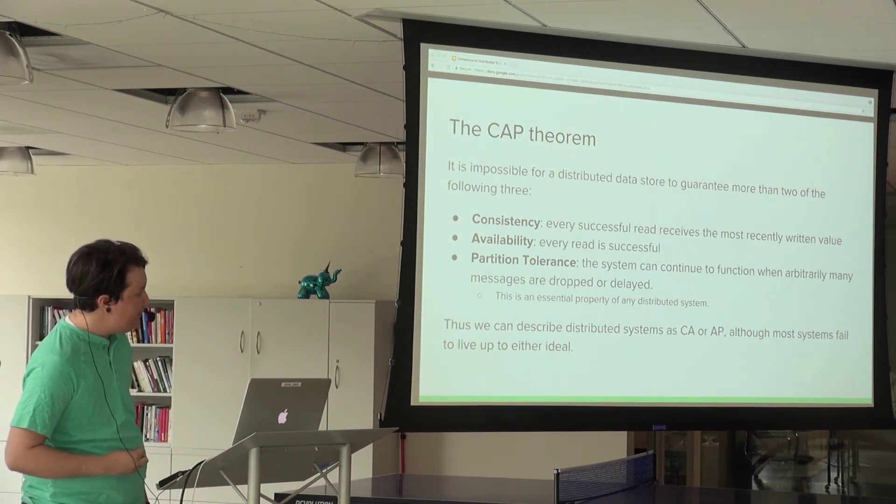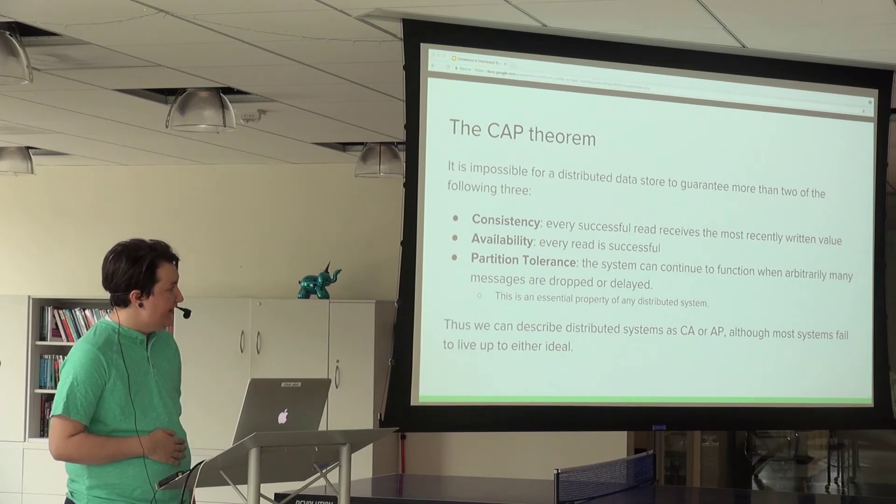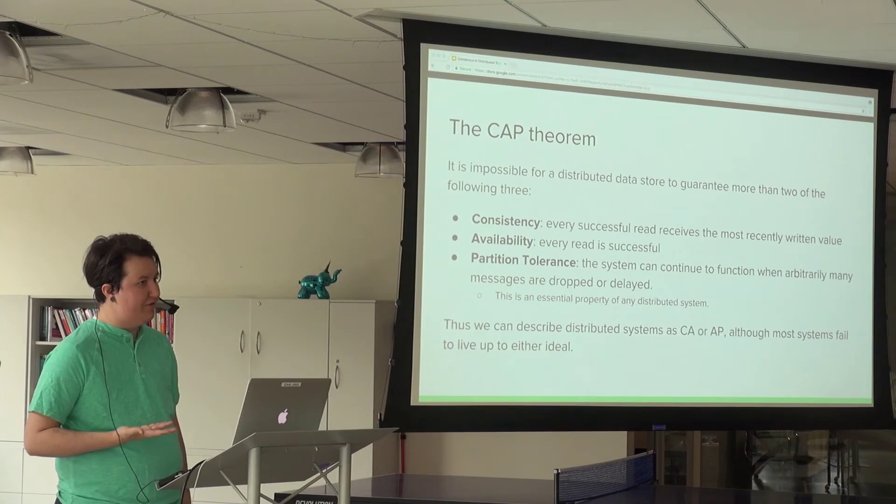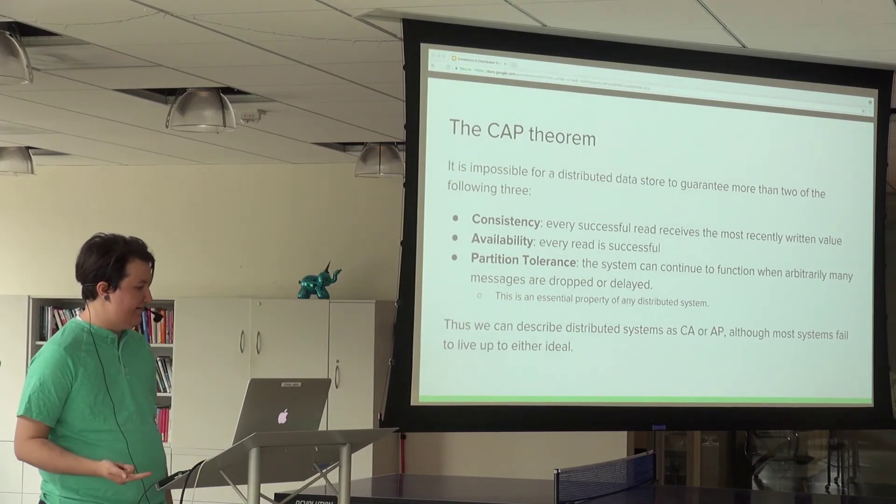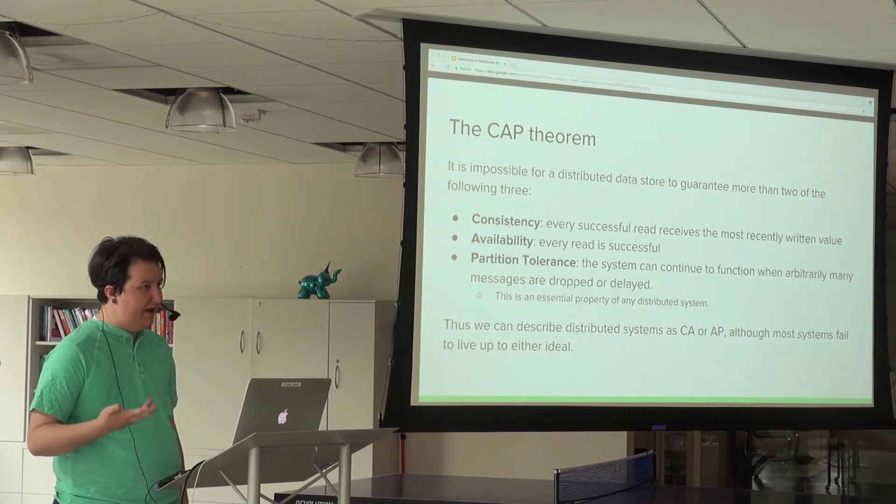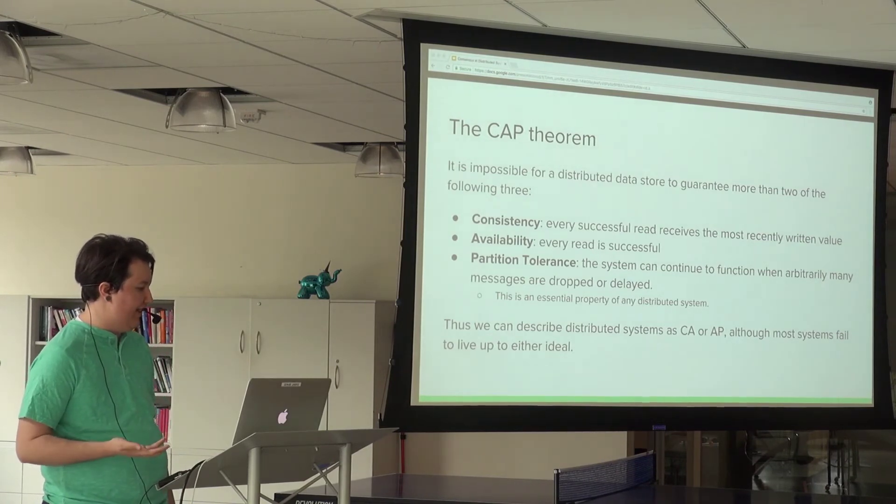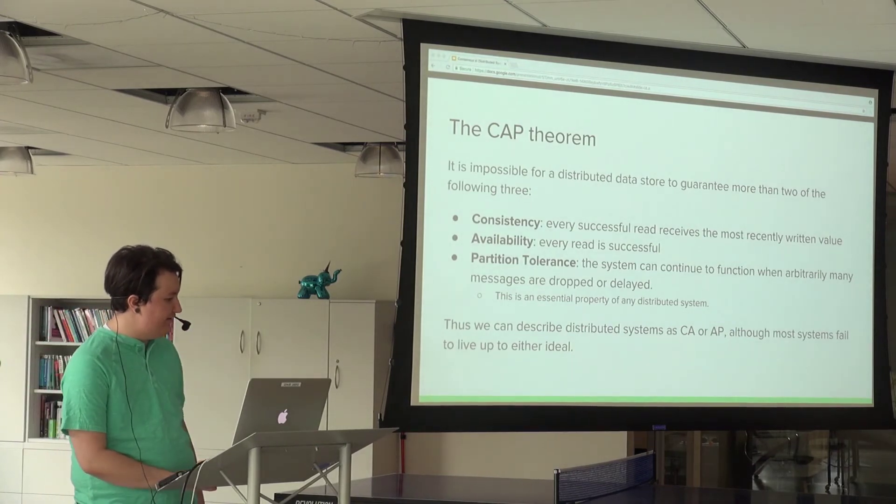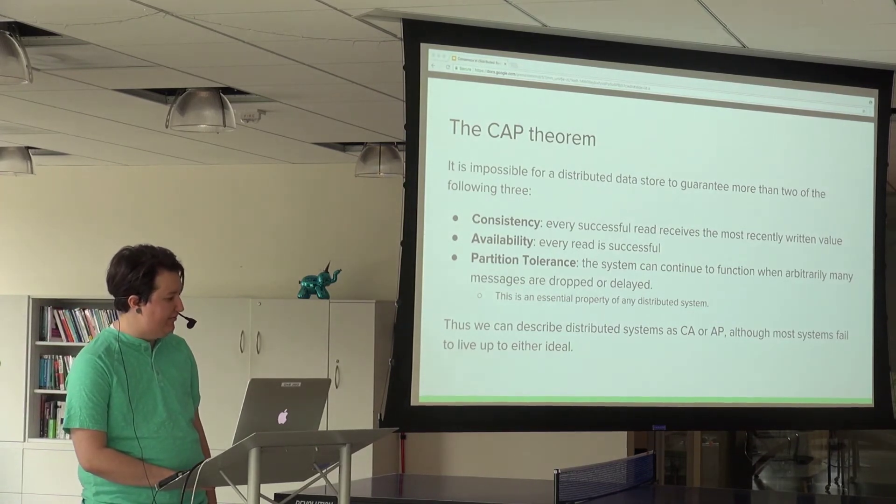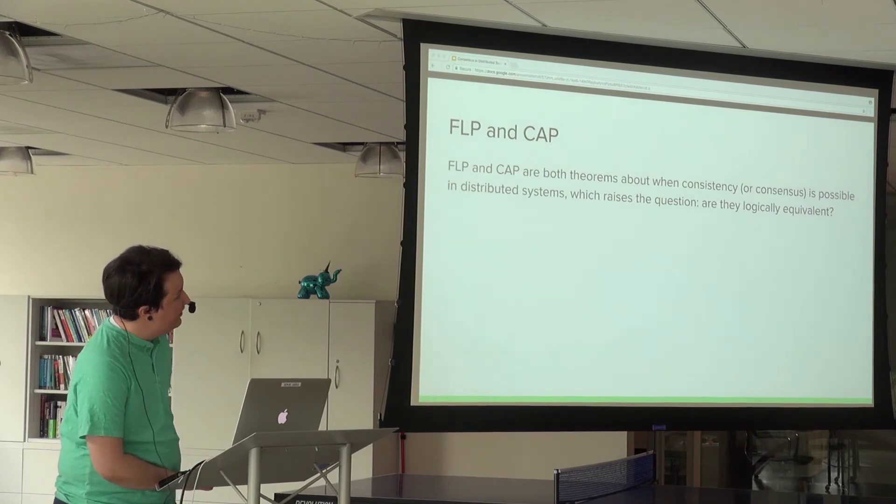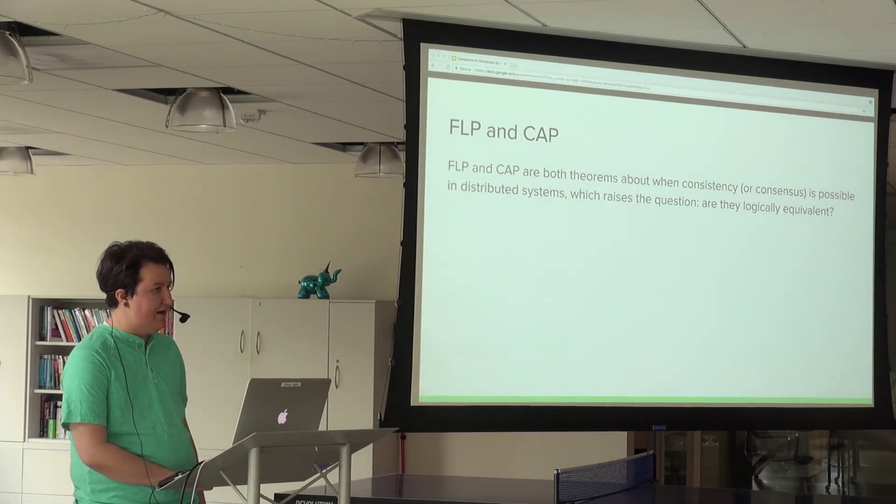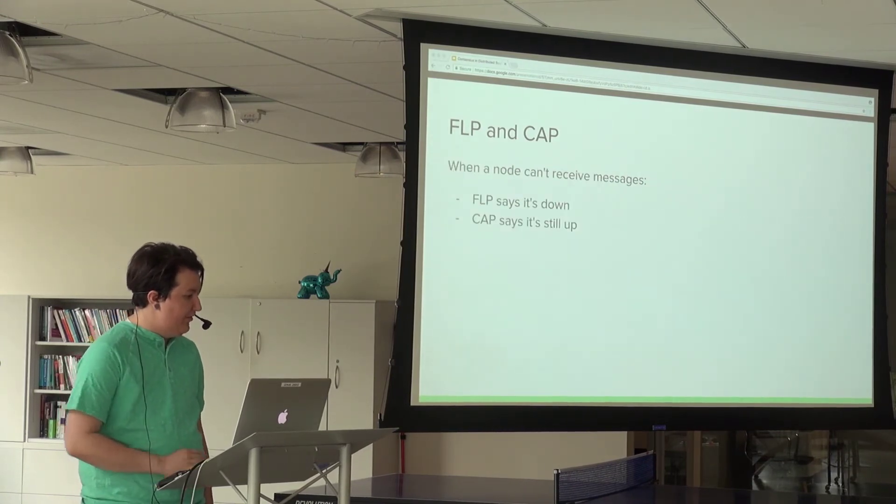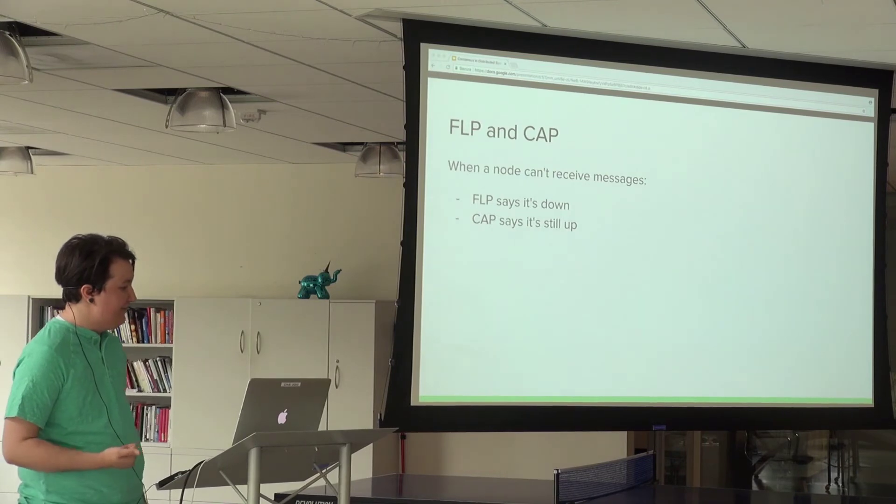You don't have to choose between consistency and availability when the network is up and working properly with low latency. You only have to choose when there's a network partition. There are extensions about what happens in a healthy system, whether it's low latency or high consistency, but I won't get into that.